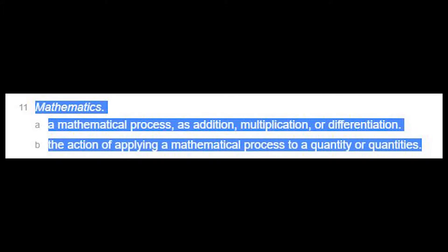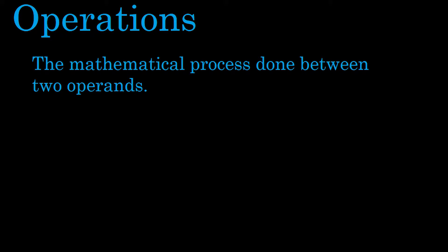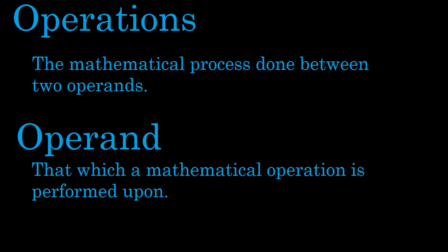So let me start from the beginning. The whole controversy stems from an argument about the order of operations. But what is an operation? The dictionary defines it as a mathematical process, such as addition, multiplication, or differentiation, and also as the action of applying a mathematical process to a quantity or quantities. To get a slightly more precise definition, an operation is the mathematical process that is done between two operands. And what is an operand? You can define it the opposite way — an operand is what a mathematical operation is performed upon.